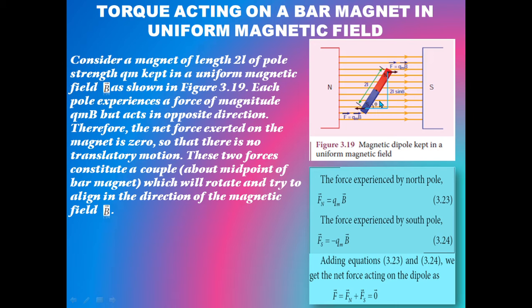Each pole experiences a force of magnitude QmB, but the forces act in opposite directions. Therefore, the net force exerted on the magnet is zero.